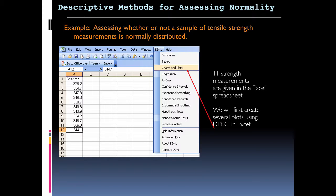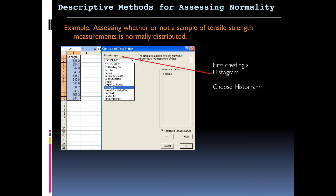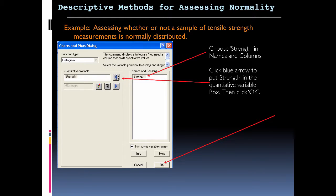So in Excel, you're going to be looking at these things here. This is an example of assessing whether or not a sample of tensile strength measurements is normally distributed. We're going to go to charts and plots, and we're going to create a histogram. Then we're going to choose strength and use the blue arrow to put strength in the quantitative variable box, and click OK.